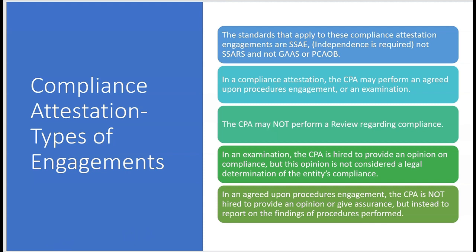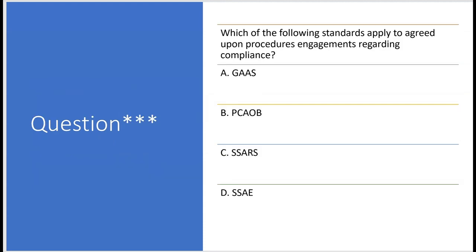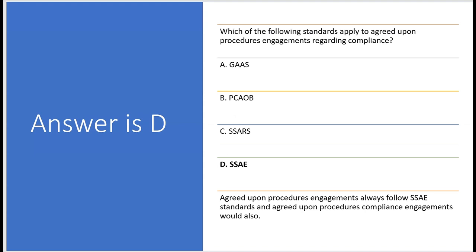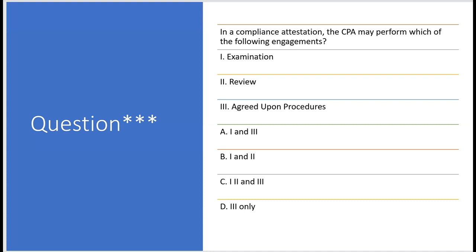Which standards apply to agreed-upon procedures engagements regarding compliance? Not GAAS or PCAOB — we're not auditing financial statements. Not SSARS — accounting and review services. The answer is SSAE, and the same SSAE standards apply to examination engagements as well. In a compliance attestation, the CPA may perform an examination or agreed-upon procedures — but not a review. So if asked which engagements a CPA can perform for compliance attestation, the answer is examination and agreed-upon procedures only.